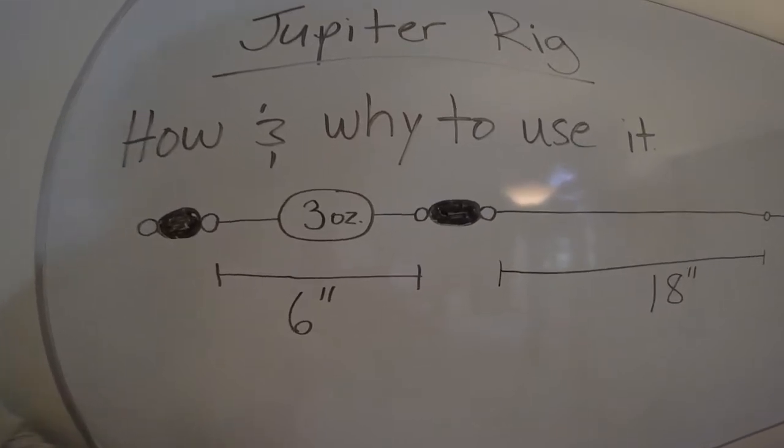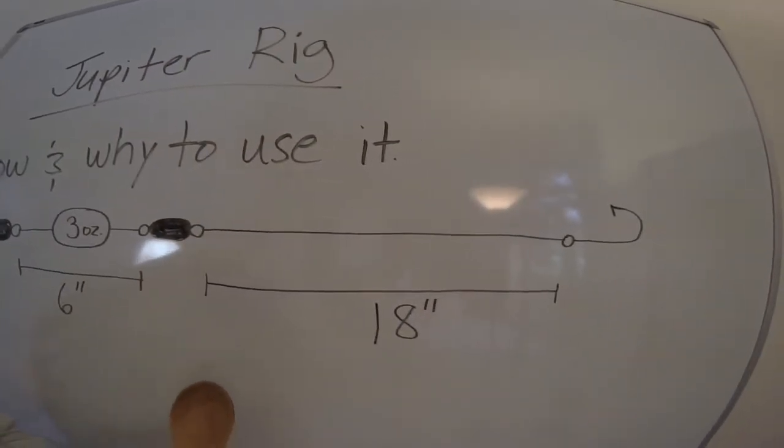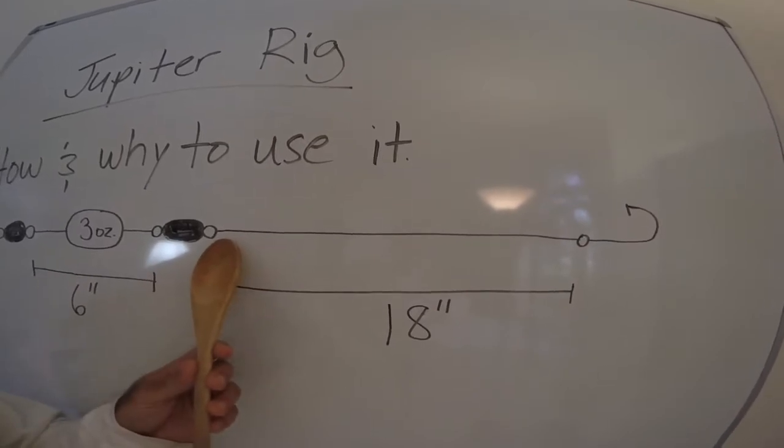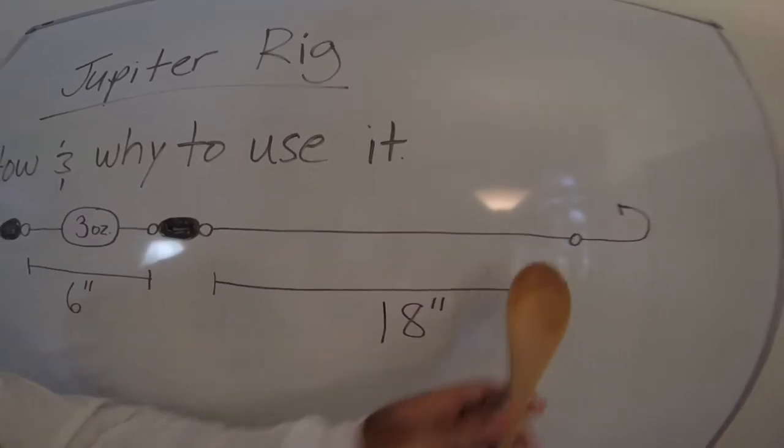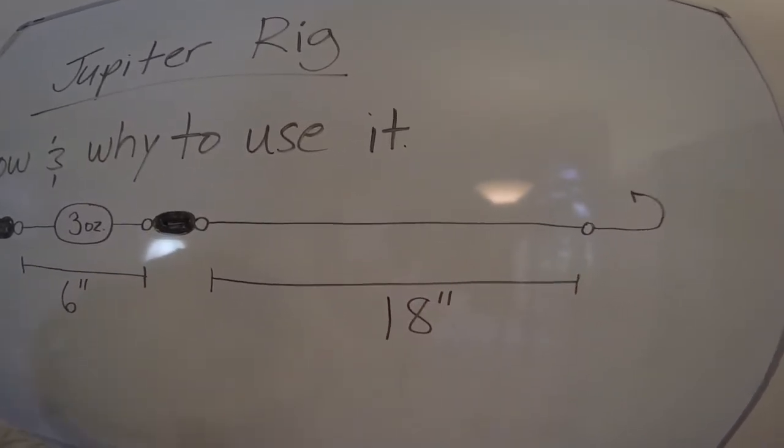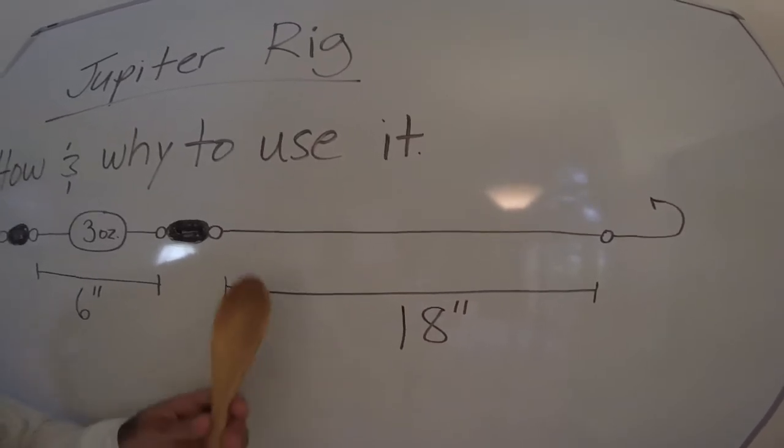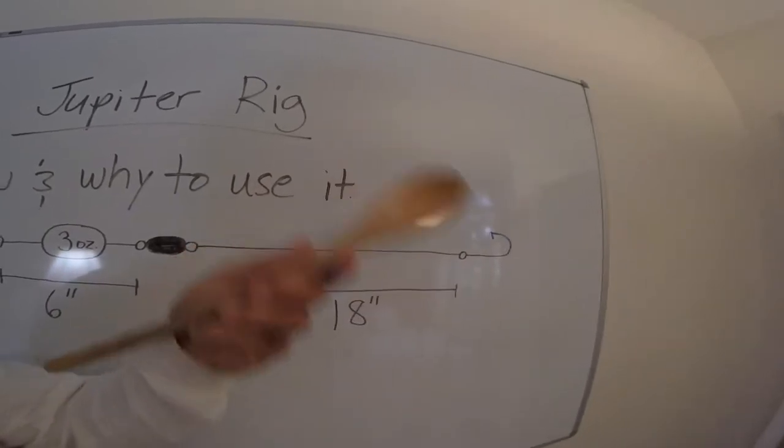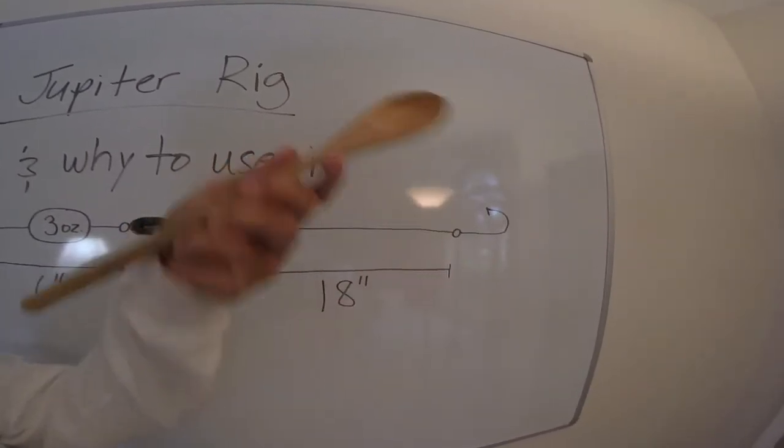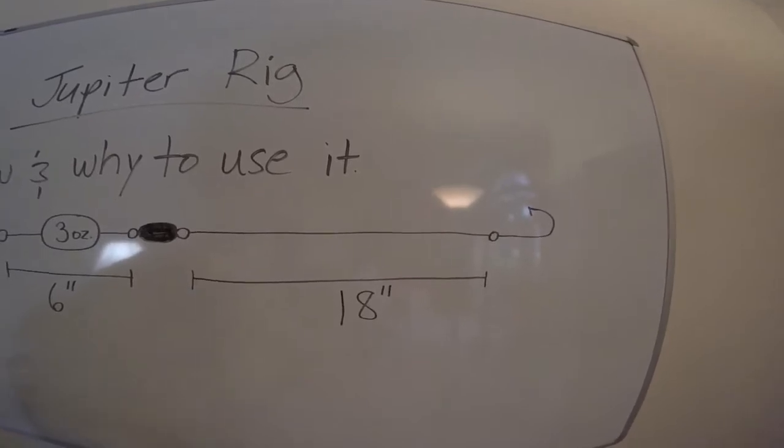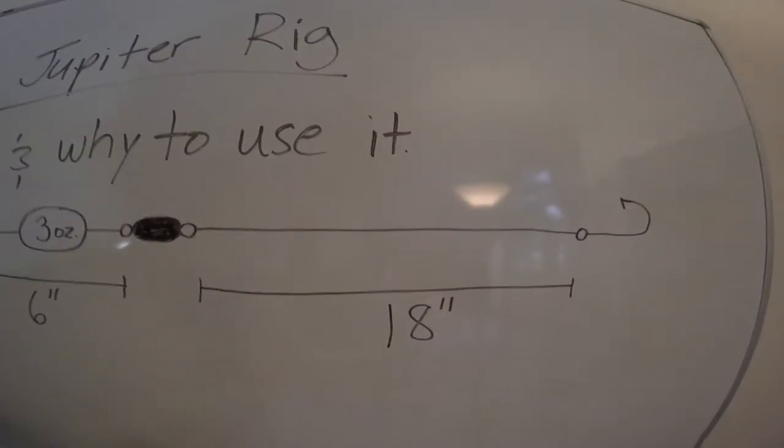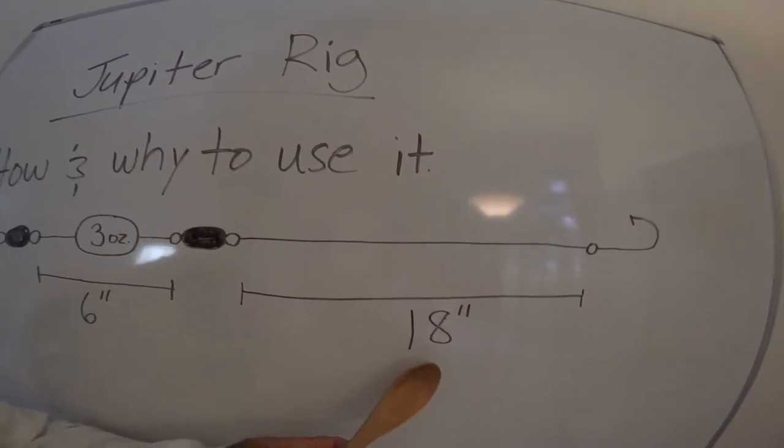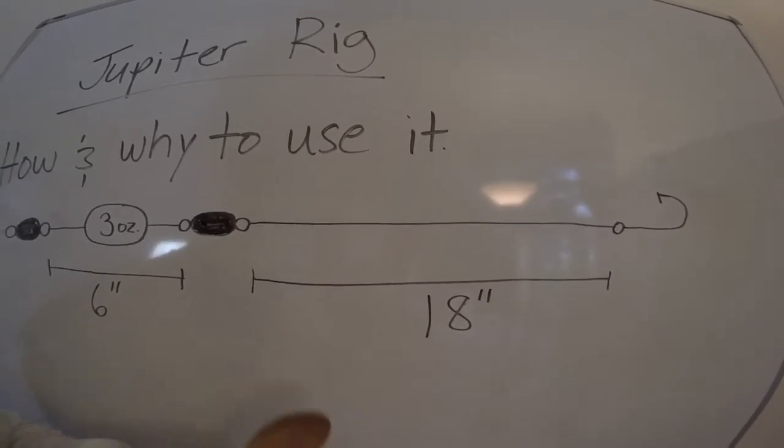And then as far as the leader goes from your swivel to the hook, I don't want it to be more than 18 inches long because I find that if it has more than 18 inches, the bait tends to just spin like this, which obviously you don't want. It's not a very natural presentation. So as long as you keep it to about 18 inches, you're usually pretty good with that.